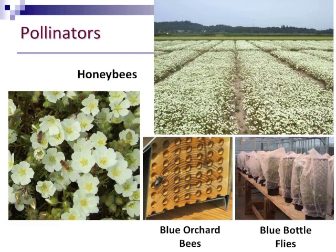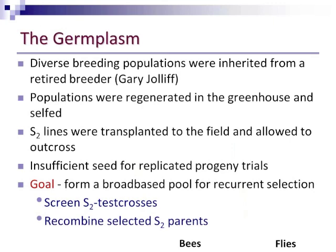There are a number of pollinators that can be used for Metafoam. Commercially, growers would rent honey bee hives. But for the breeding program, we've recently figured out that we have a couple of different options. We could also use blue orchard bees, which work very well in small isolations or in small cages. We also can use blue bottle flies in the greenhouse to do small recombinations, or as you see here in this picture, to self large numbers of plants.